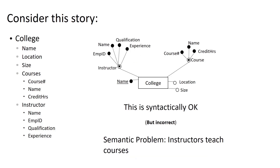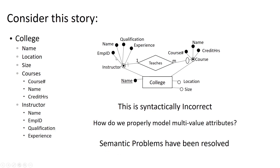We could resolve this by making instructor and course multi-value attributes, and this is still syntactically okay because we're using all of the grammar in an appropriate way. But we are not capturing the business rule where we say instructors teach courses. So maybe we resolve that by putting a relationship between the instructor attribute and the course attribute — a one-to-many relationship between instructors and courses. But this is syntactically incorrect, because we can only have a relationship between two entities, not between attributes. So we've addressed the semantic problems, but now we have a syntax problem.